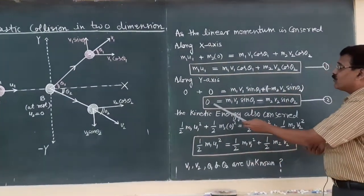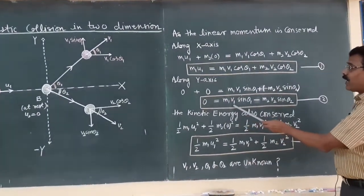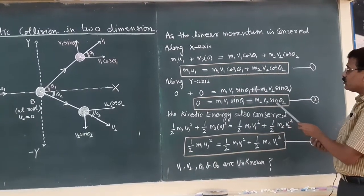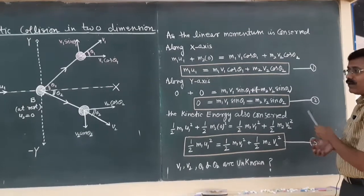When you simplify then you find 0 is equal to m1 v1 sin theta 1 minus m2 v2 sin theta 2, equation number 2.